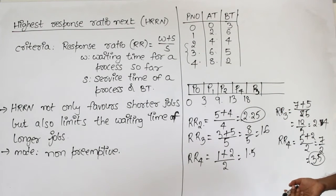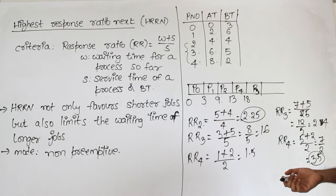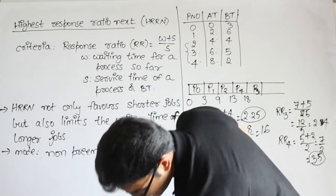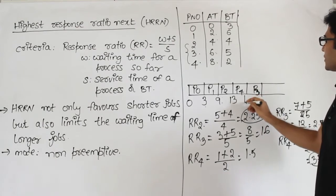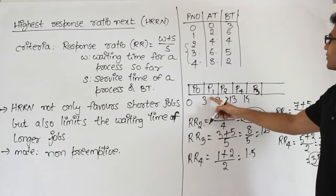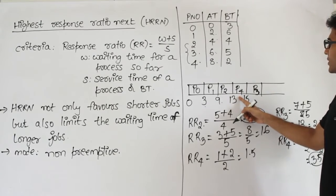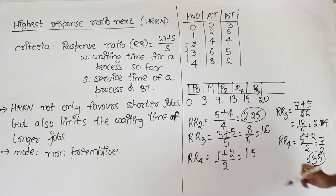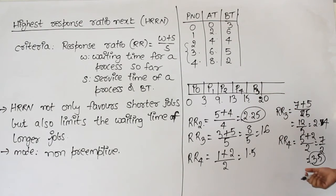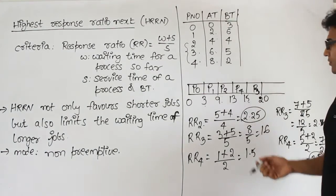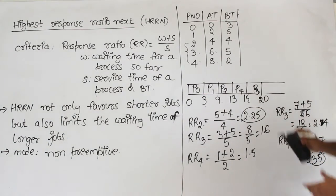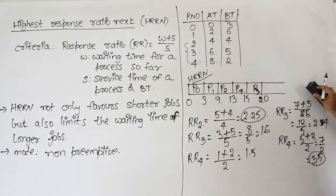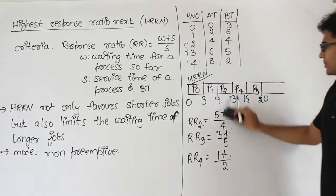P4 requires only 2 units, so it runs from 13 to 15. Then P3, the only remaining job requiring 5 units, is scheduled and runs to time 20. This is the HRRN Gantt chart. Now let's compare with the Gantt chart for Shortest Job First to see the difference.